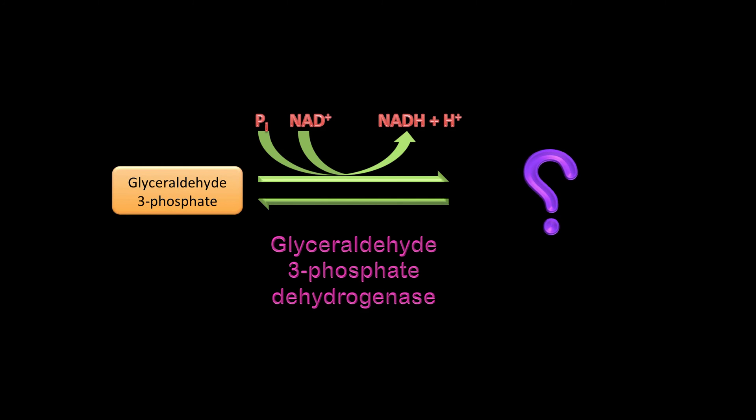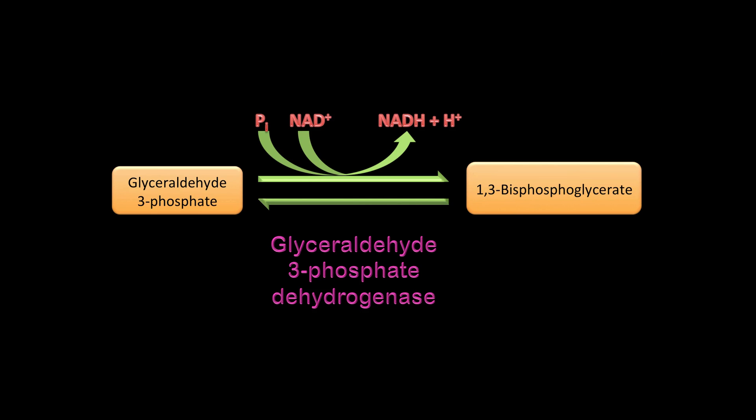We have a lot happening here: glyceraldehyde-3-phosphate, the enzyme is glyceraldehyde-3-phosphate dehydrogenase. You are adding inorganic phosphate — that's a phosphorylation reaction — and you have NAD⁺ going to NADH, so that's an oxidation. This phosphorylation differs from hexokinase or PFK1 in that the phosphate comes from inorganic phosphate, not ATP. The energy released from the oxidation of NAD⁺ to NADH makes the addition of the phosphate group possible. This is the only oxidation step in glycolysis, and your product is 1,3-bisphosphoglycerate, or 1,3-BPG.